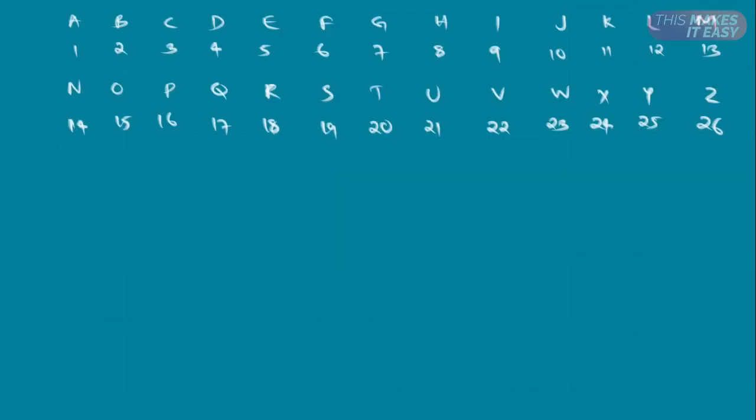So here I have written the 26 alphabets and the corresponding numerical value for each of them, starting from A is 1, B is 2, till Y is 25 and Z is 26. This can be written even before the exam starts in a blank paper given by invigilators.